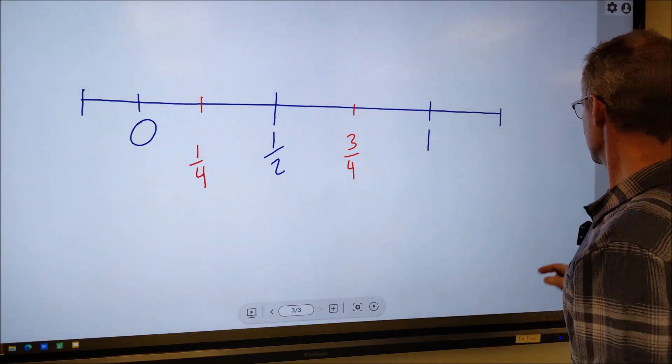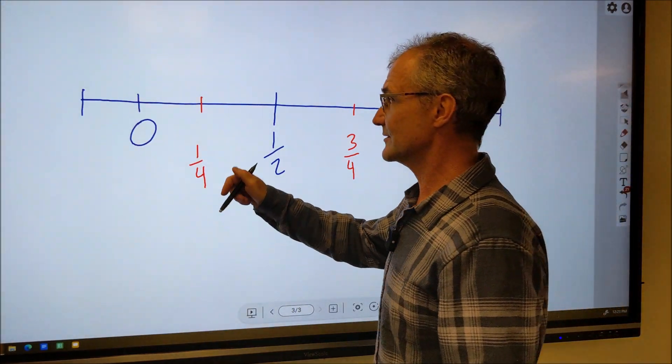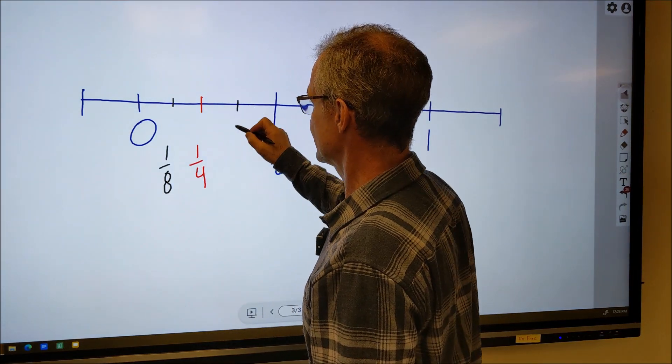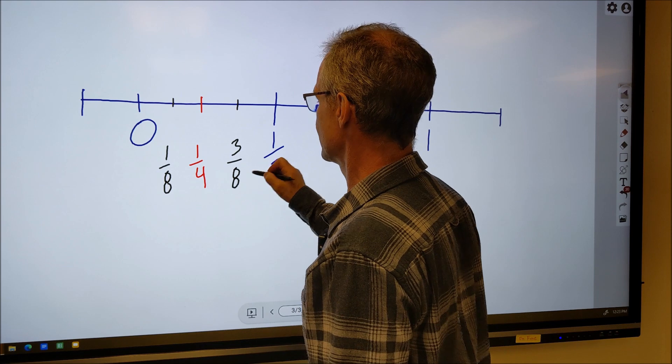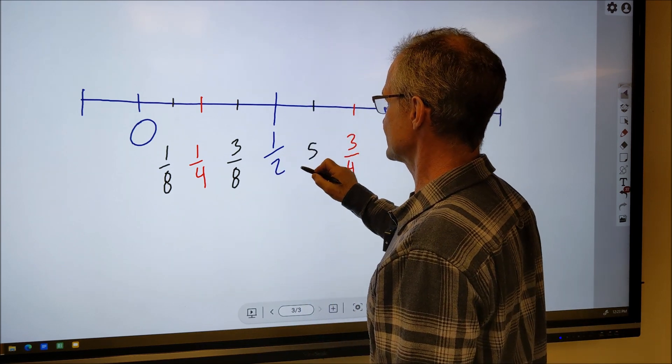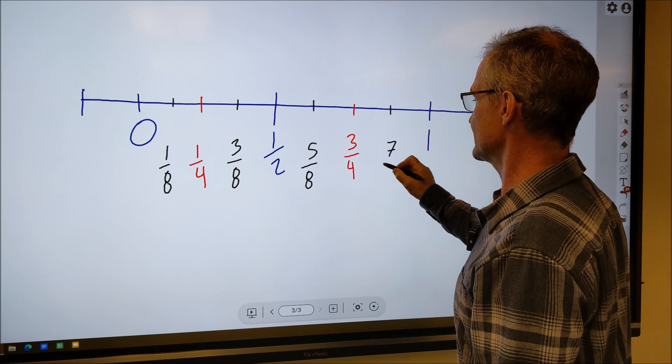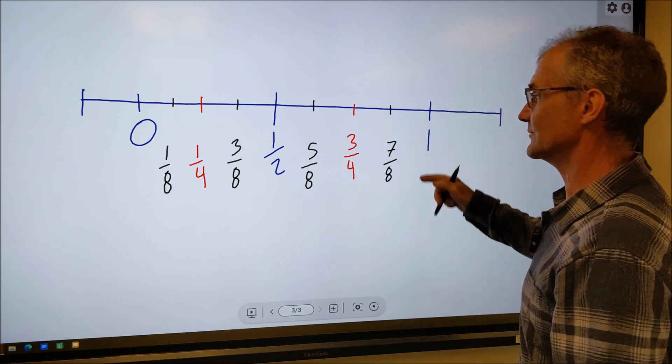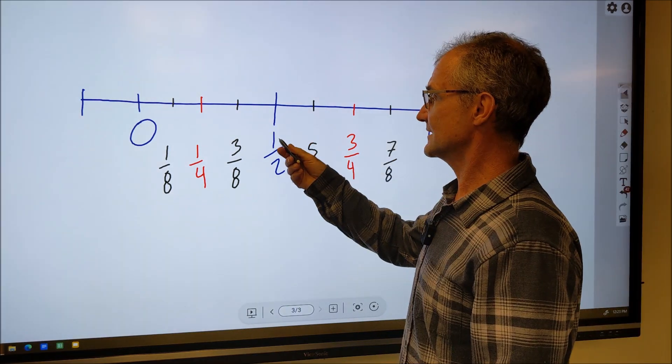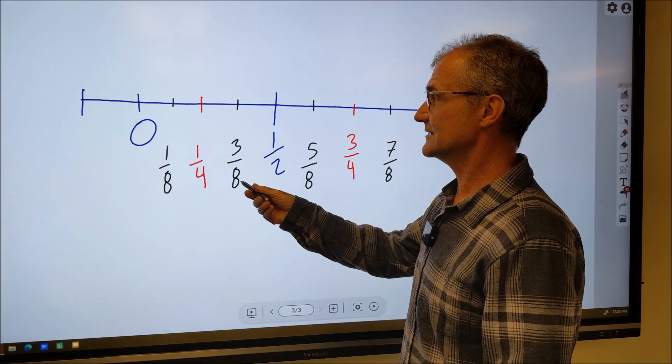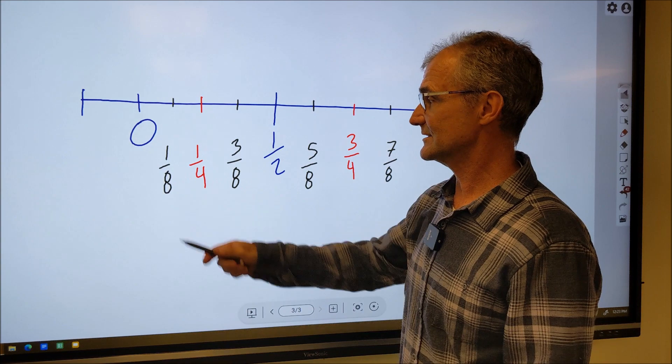Then I'm going to cut those quarters in half. So I double the bottom number. One eighth, two eighths, three eighths, four eighths, five eighths. This is going to be the equivalent of six eighths, seven eighths, over to one which is eight eighths. So the longest line is going to be a half. The next longest a quarter. The next longest an eighth. I'm going to cut those in half as well to get sixteenths.